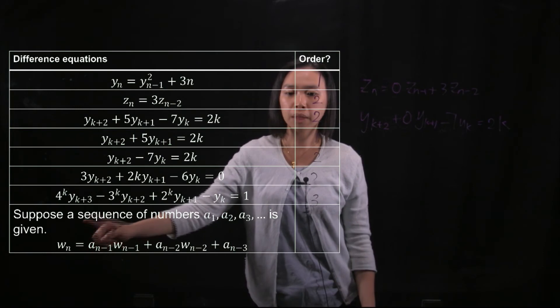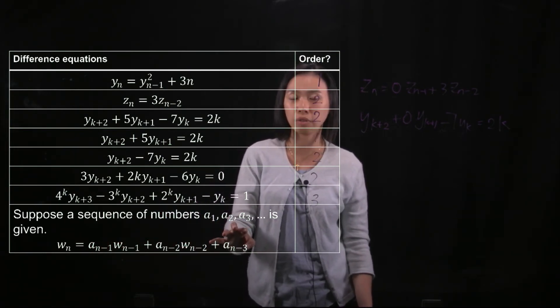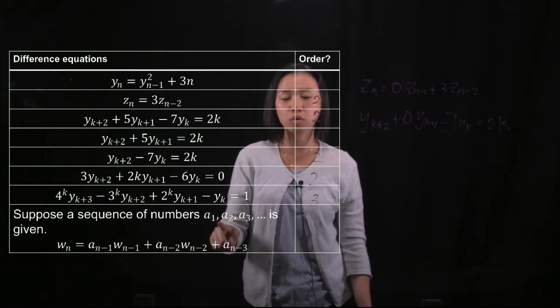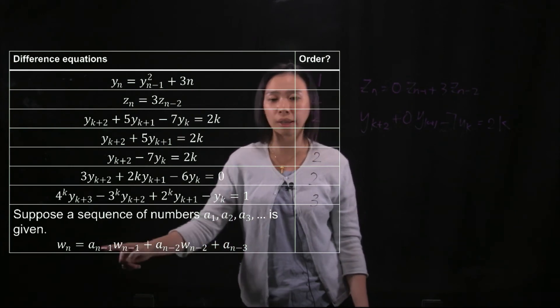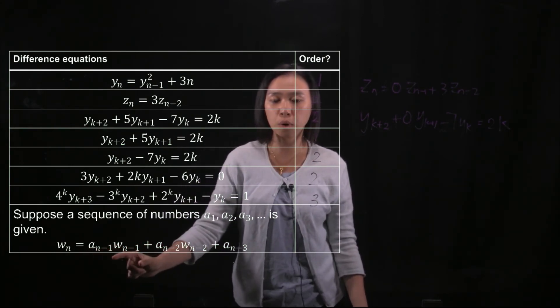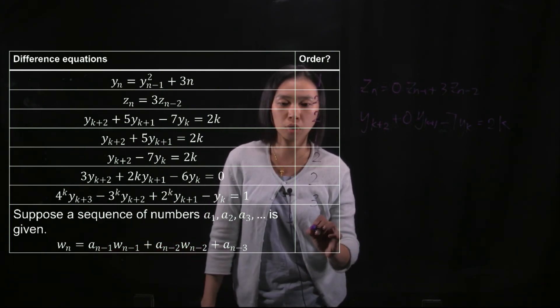And then suppose a sequence of numbers a1, a2, a3 is given. So all of these numbers are given. You can imagine them as constants or you can simply substitute all of them by 1. Then you can get rid of them. So wn right now it depends on wn minus 1 and wn minus 2 only. So it's of order 2.